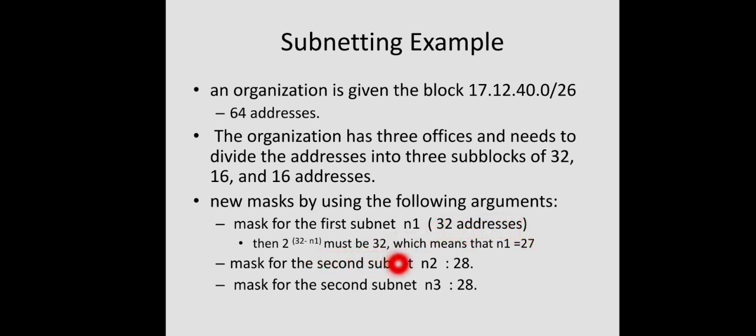For the second subnet with 16 addresses, 4 bits are required for the host number, so the remaining 28 bits represent the network and subnet number — the mask is /28. The third subnet also has 16 addresses, so the mask is again /28. Depending on the number of addresses in the block for each subnet, the mask will be different.